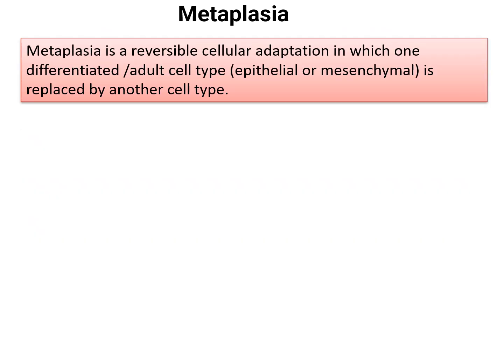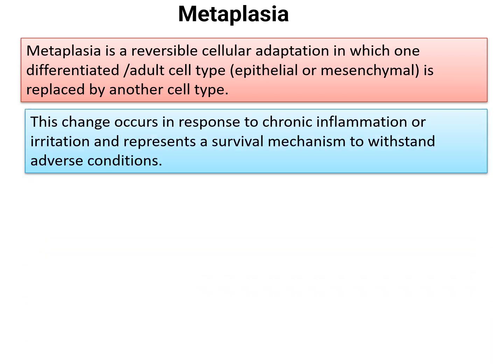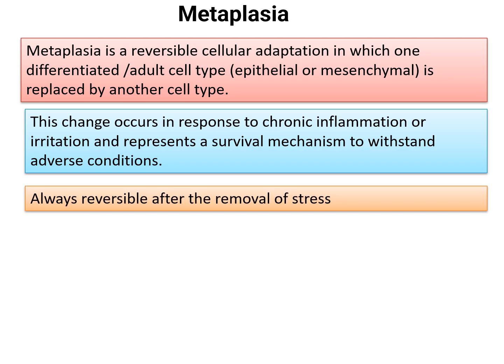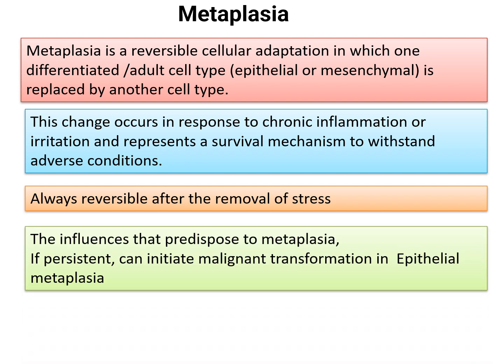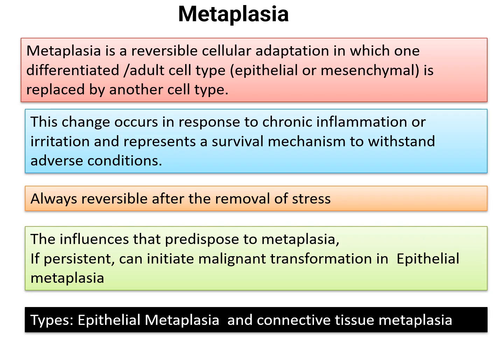Metaplasia is a reversible cellular adaptation in which one differentiated or adult cell type — either epithelial or mesenchymal tissue — is replaced by another cell type. It occurs due to chronic inflammation or irritation and represents a survival mechanism to withstand adverse conditions. The two types are epithelial metaplasia and connective tissue metaplasia.